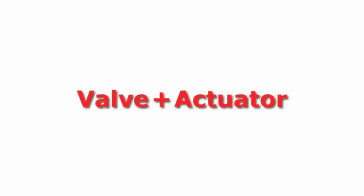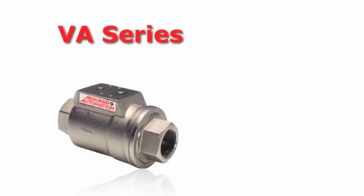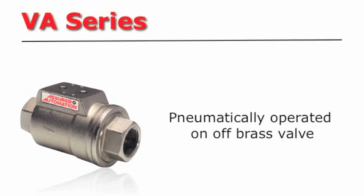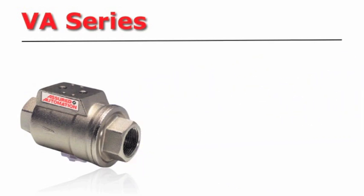Valve plus actuator come together to form the VA series from Assured Automation. The VA series is a pneumatically operated on-off brass valve. It combines a pneumatic actuator and an on-off valve into a compact body.